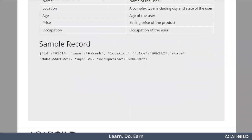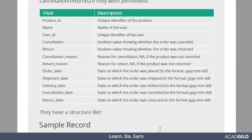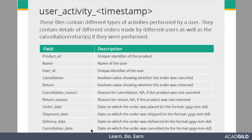The next data is users activity, which contains various types of activities performed by users — such as product ID, name, user ID, whether the product has been cancelled or returned, the reason for cancellation or return, order date, shipment, delivery, and various other fields. This is how the data looks like.